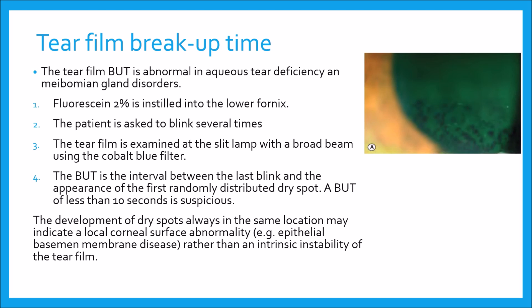The breakup time is the interval between the last blink and the appearance of the first randomly distributed dry spot. A breakup time of less than 10 seconds is suspicious. The development of a dry spot always in the same location may indicate a local corneal surface abnormality, for example epithelial basement membrane disease, rather than an intrinsic instability of the tear film. You can see the breakup time disturbance and these black spots appearing in the picture shown.